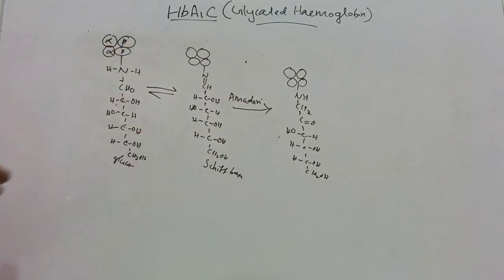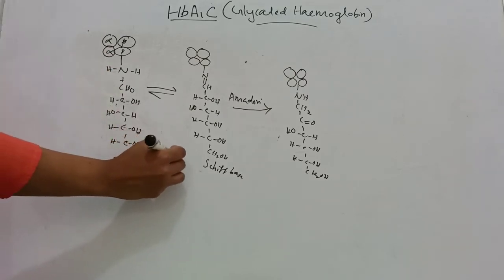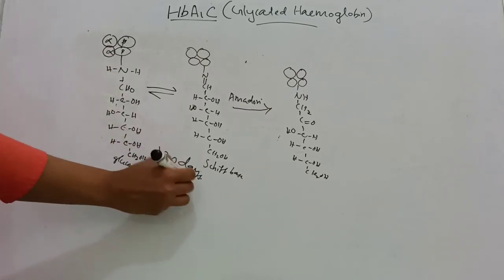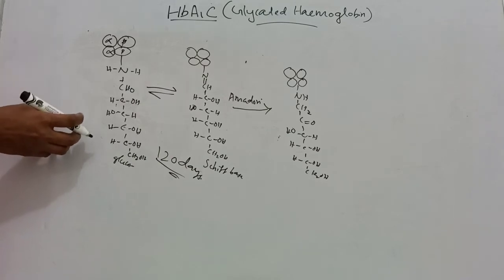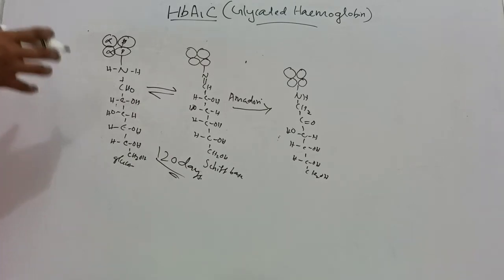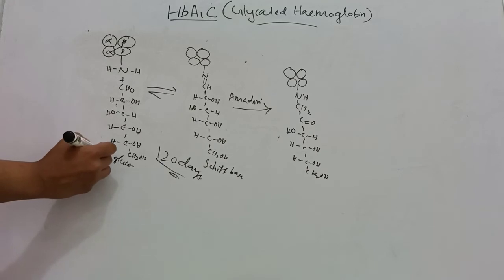The glucose remains attached to the hemoglobin for the lifespan of RBC, which is about 120 days. So this test shows the average level of glucose in the blood for the past 3 months.